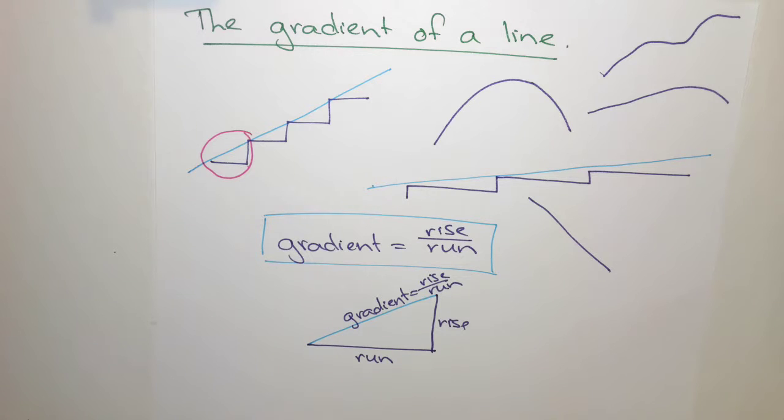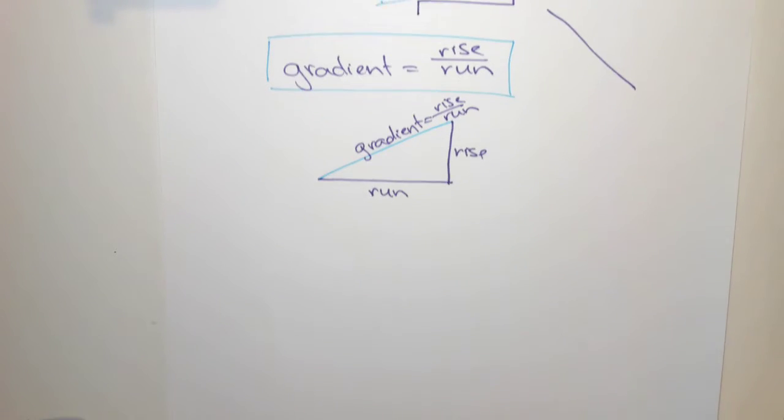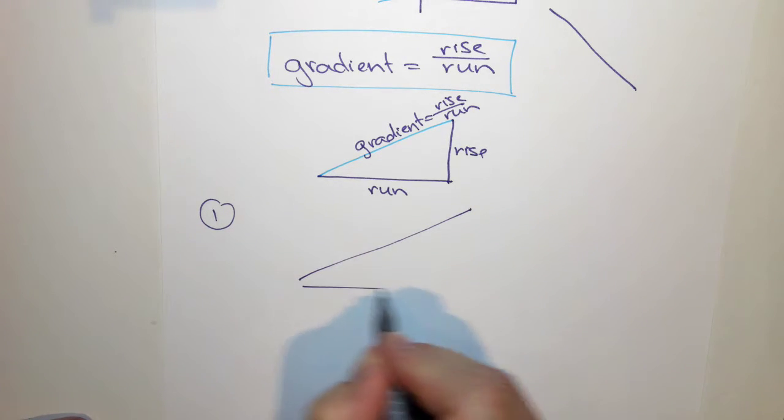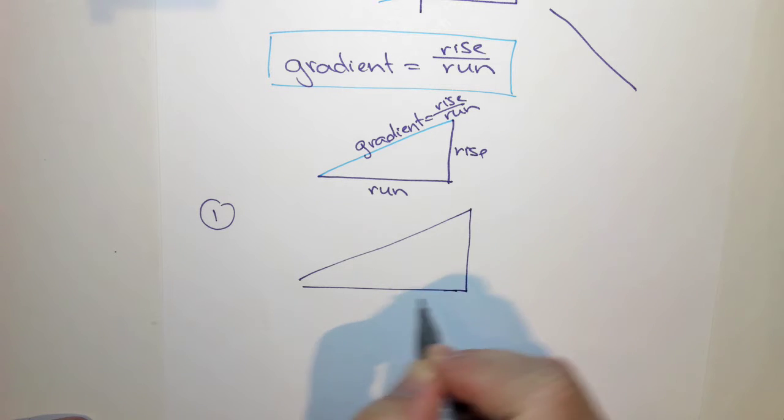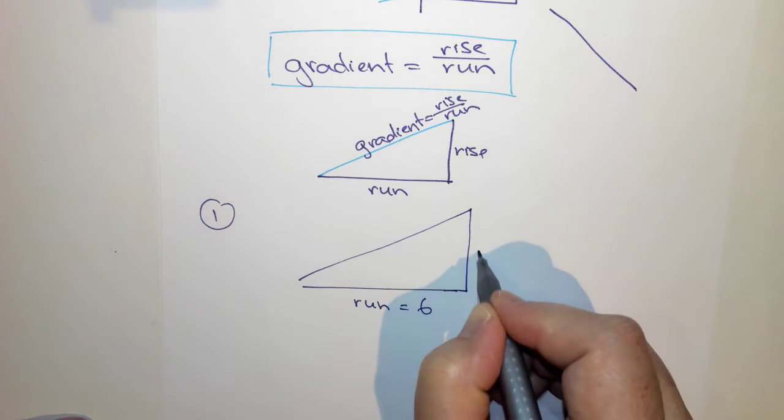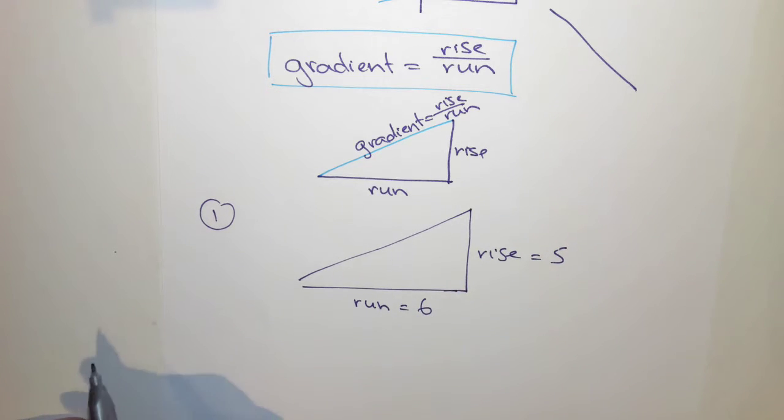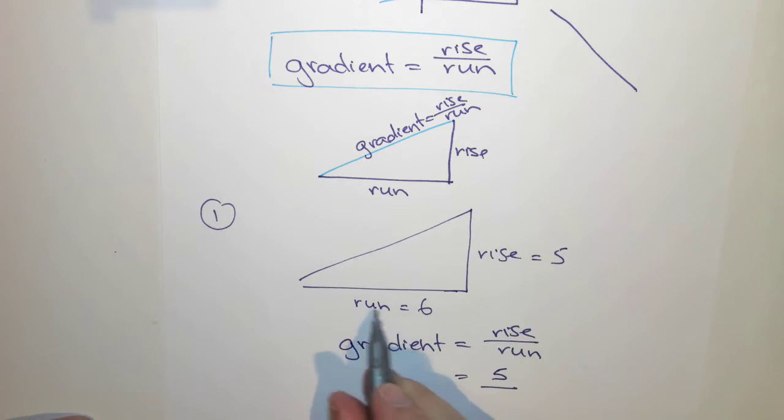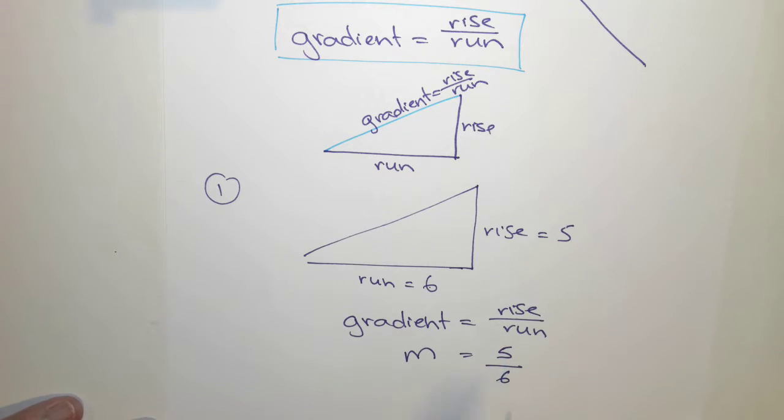So let's calculate the gradient for a particular example. So let's say I had a line, and that had a run of 6 and a rise of 5. What would the gradient be? Well, we've got our formula, gradient is equal to rise over run. And in this case, we're rising up by 5. So it's a rise of 5 divided by the run of 6. So a gradient, and often we use the letter M to denote gradient. Our gradient is 5 over 6.